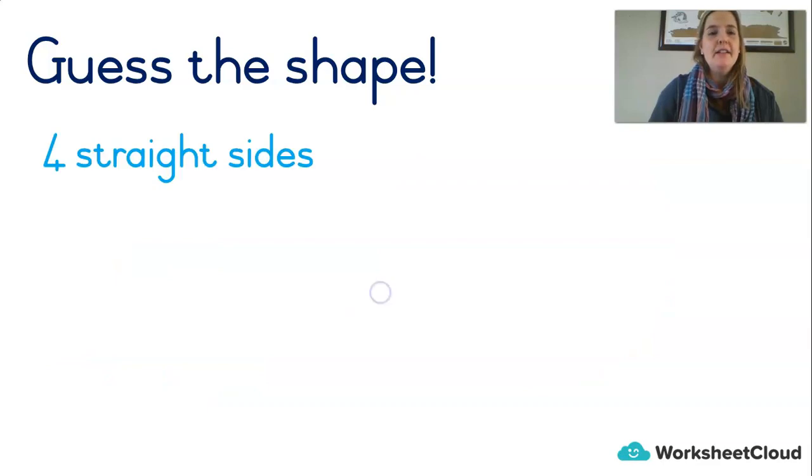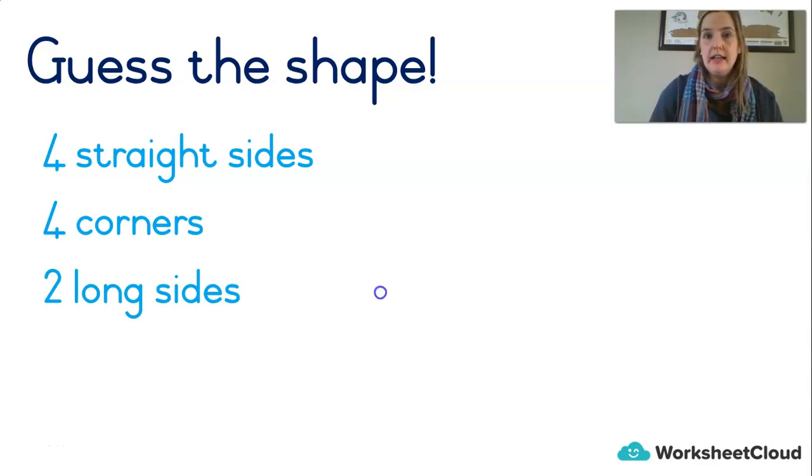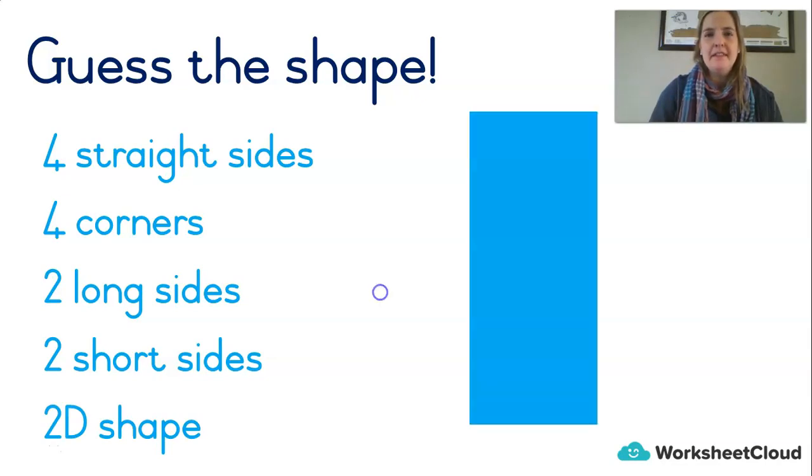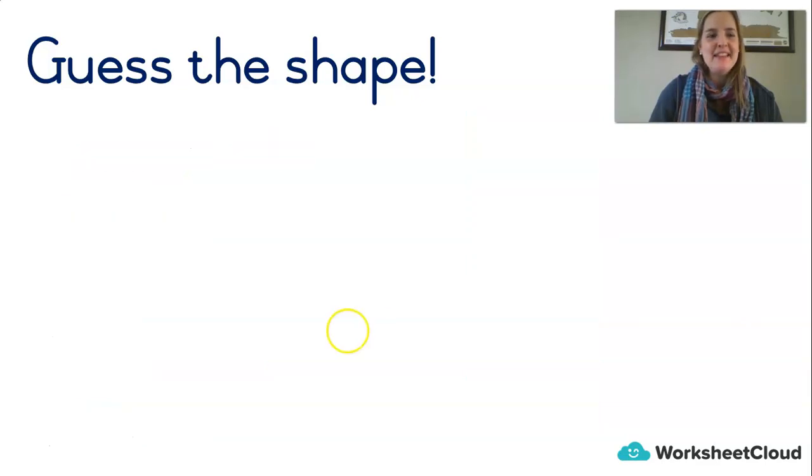What about four straight sides, four corners, two long sides, two short sides, and it's a 2D flat shape. What can it be? Rectangle. Well done. Let's do some more.